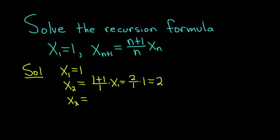So x sub 3, again, 3 is taking the place of n plus 1. This means that n is equal to 2 in this case. So we're going to put a 2 here where all the n's are. So it'll be 2 plus 1 over 2 times x sub 2. But we know what x sub 2 is. It's 2 from before. So this is going to be 3 over 2 times 2. 2's cancel and we get 3.